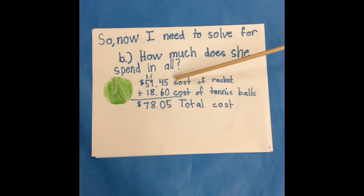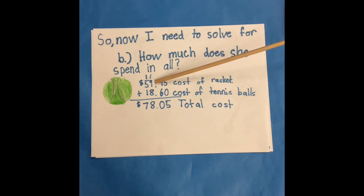How I solved this was: 5 plus 0 equals 5, 4 plus 6 equals 10. You put the 0 below the 6 and regroup the 1 on top of the 9. 1 plus 9 equals 10, plus 8 equals 18. You put the 8 below the 8 and regroup the 1 on top of the 5. 1 plus 5 equals 6, plus 1 equals 7.